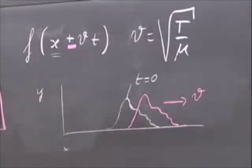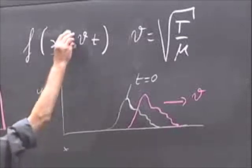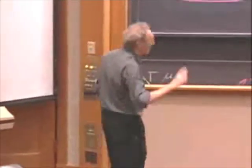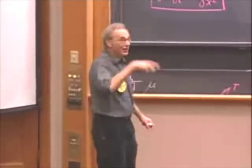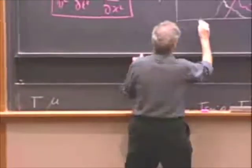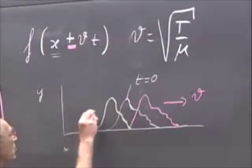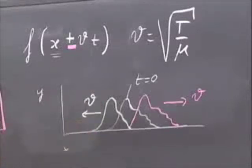Now we're going to evaluate the plus sign. What will happen if we now look at the function a little later in time? A little later in time, it has moved in this direction, and it's moving with speed V in this direction. So now you can look through the meaning of this equation.